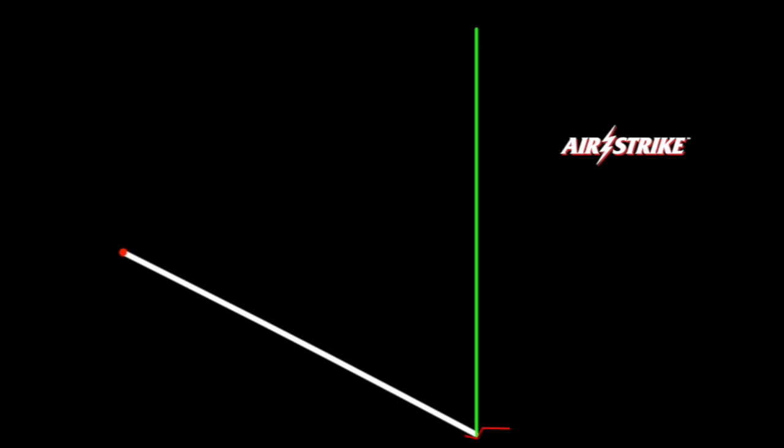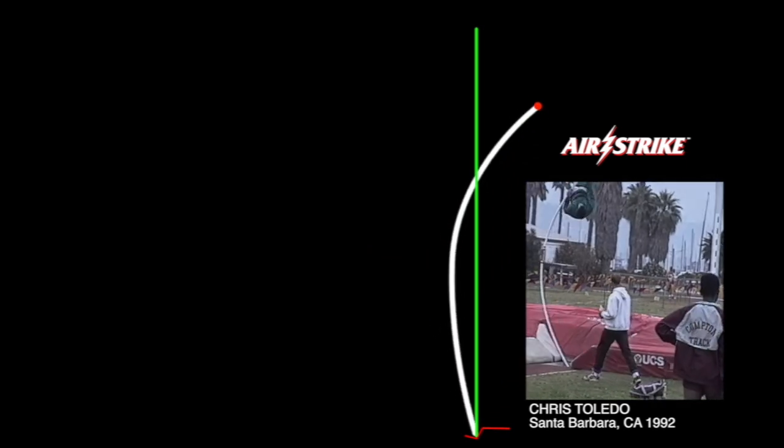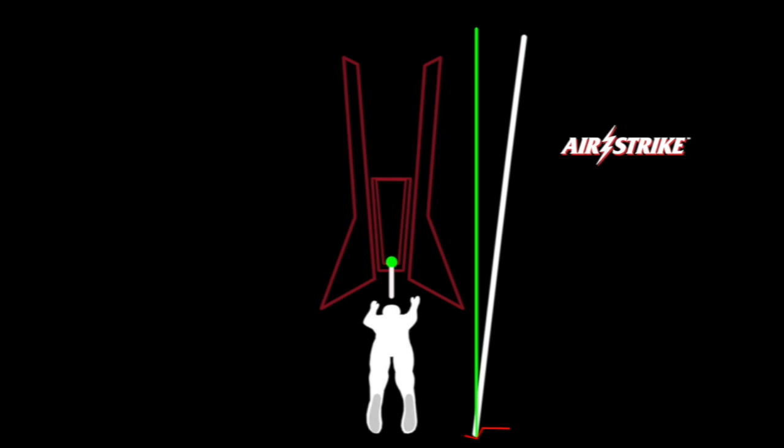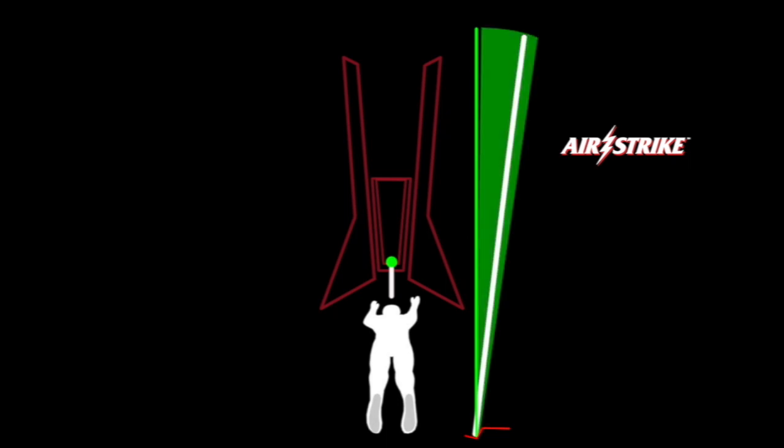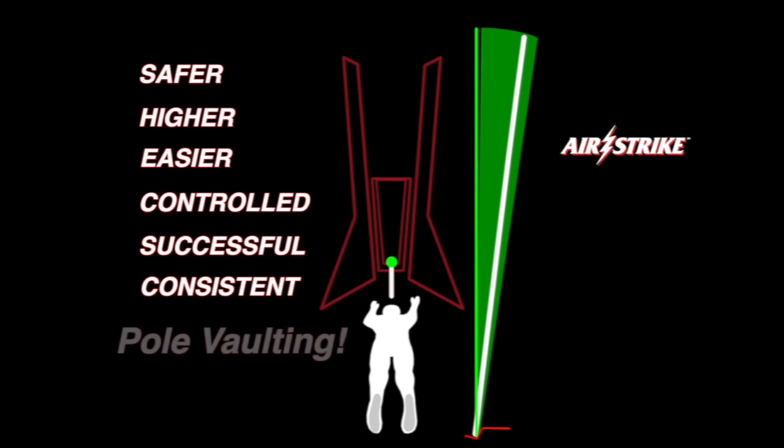well-informed athletes can choose to respect the powerful flexible vaulting pole and learn how to allow the flex pole to rotate horizontally, applying the pole's recoil force intelligently using revolutionary Airstrike pole vault techniques to produce safer, higher, easier, controlled, successful and consistent pole vaulting.